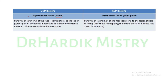In a supranuclear lesion, there is paralysis of the inferior one-fourth of the face, contralateral to the lesion. The upper part of the face is innervated bilaterally by the upper motor neurons, but the inferior half has only contralateral innervation. So the upper half of the face has bilateral innervation from both sides, while the lower half has only contralateral innervation.